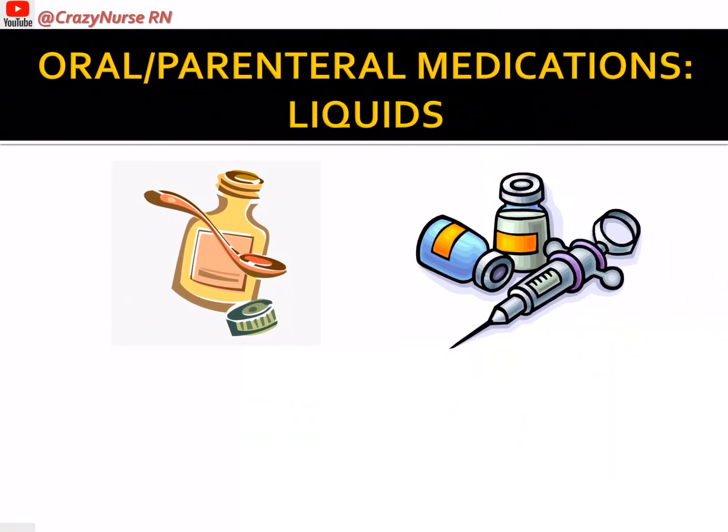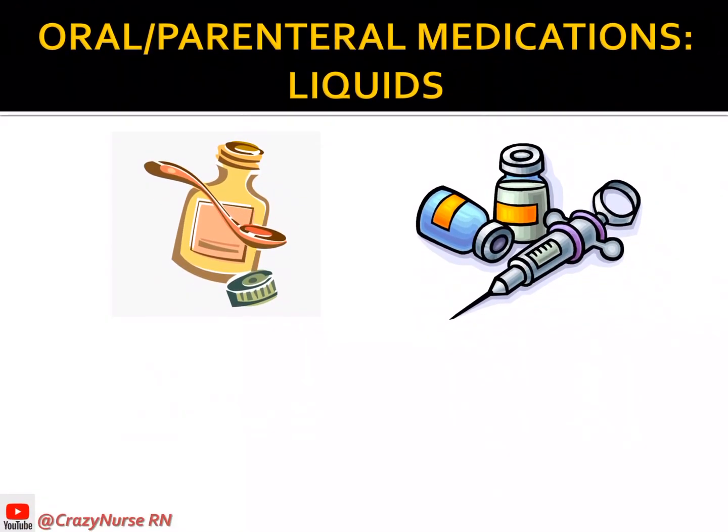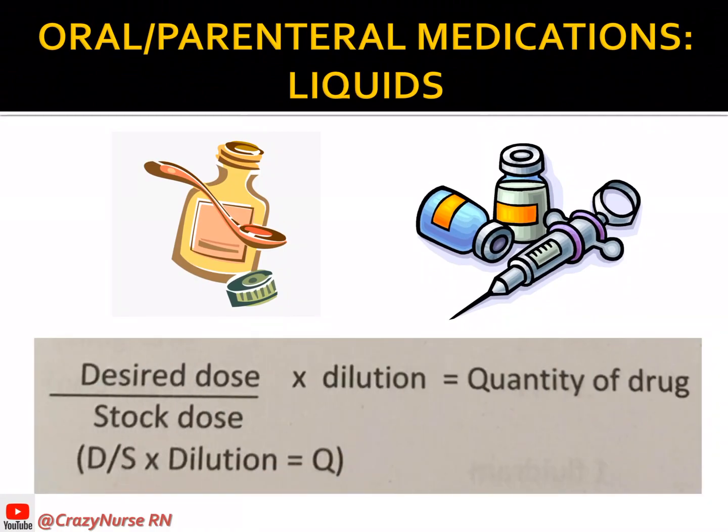For oral or parenteral medications in liquid form, the formula is: desired dose over stock dose times the dilution (also called stock volume) equals quantity of drug. In simplified form: D over S times dilution equals Q.